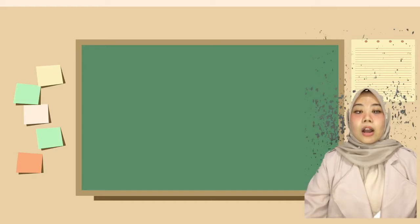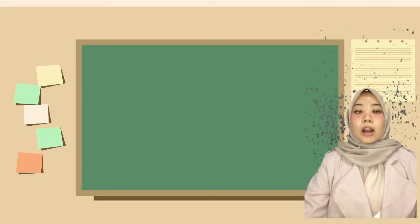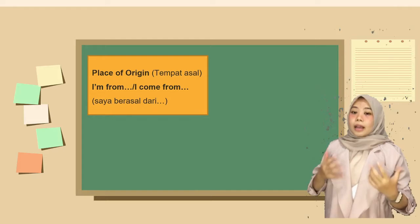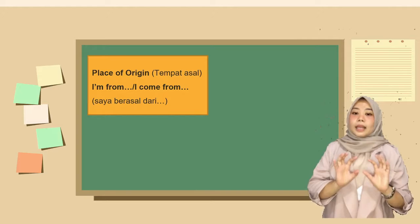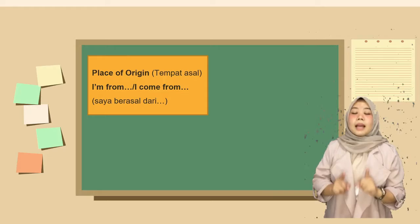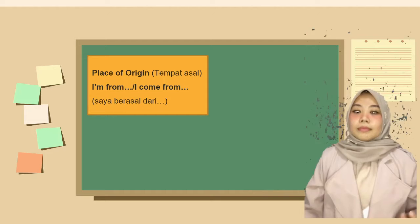Selanjutnya kita bisa menyebutkan kota asal kita atau place of origin. And you can say 'I'm from Jakarta,' or 'I come from Jakarta.' Hal ini berbeda terletak pada penggunaan to be dan verb-nya. Pilih salah satu yang kalian ingin gunakan, tetapi artinya tetap sama: saya berasal dari Jakarta.